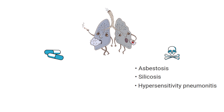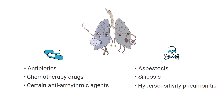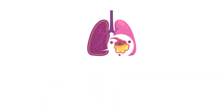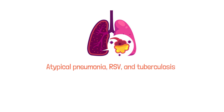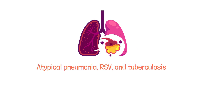There are also certain drugs and medications known for causing interstitial lung disease. Some examples include antibiotics, chemotherapy drugs, and certain anti-arrhythmic agents. Lastly, interstitial lung disease is caused by certain infections such as atypical pneumonia, RSV, and tuberculosis.